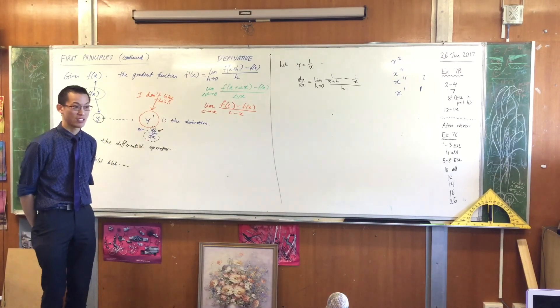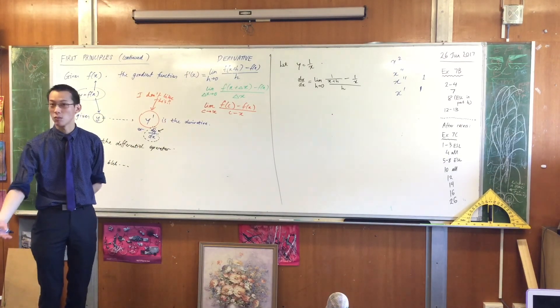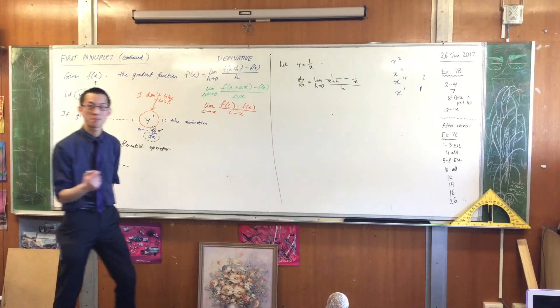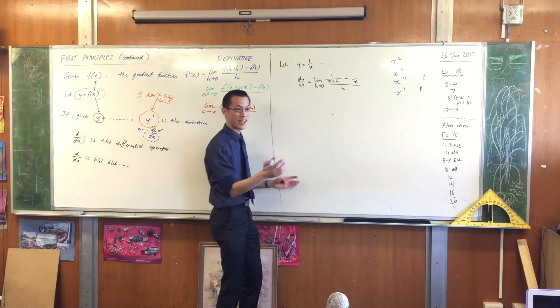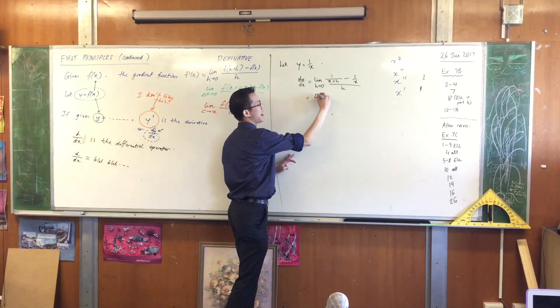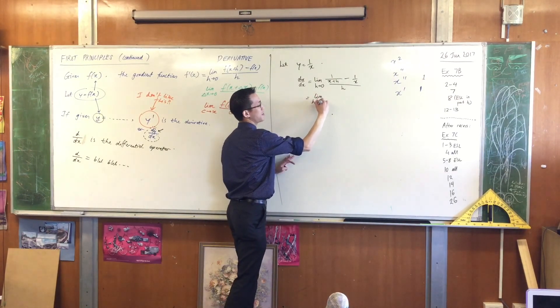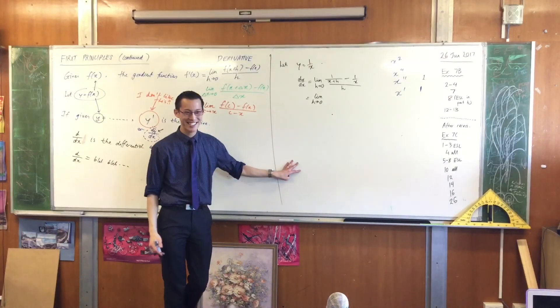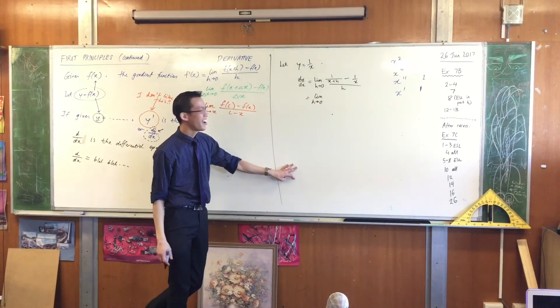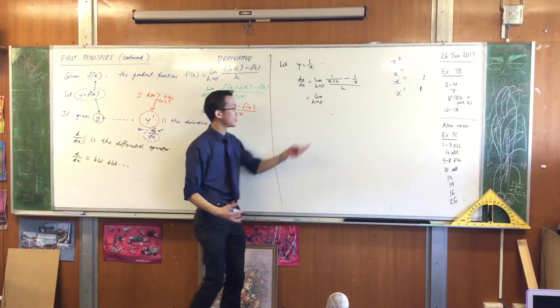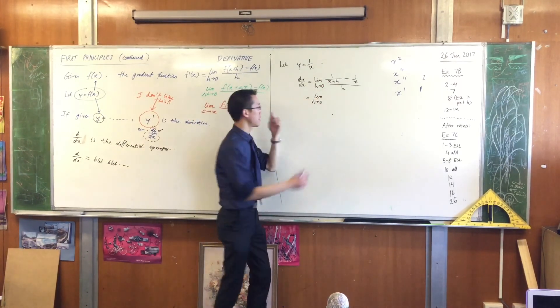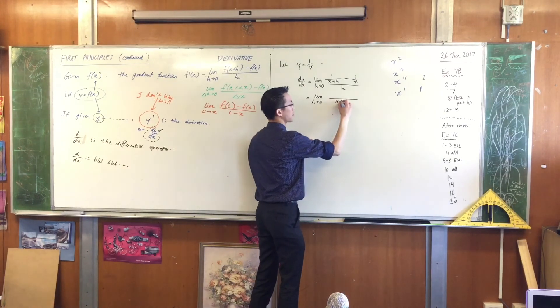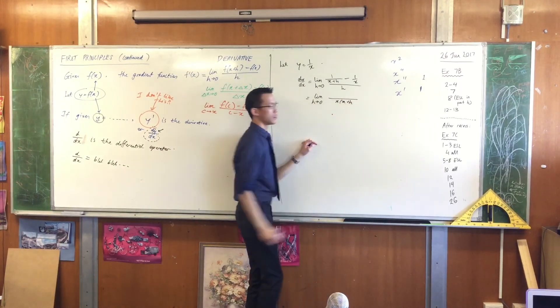So what would you like me to do instead? I have two fractions. Maybe I should just subtract them. What will I need to do in order to subtract them? What do I need between these two fractions? I need a common denominator. I'm going to write the limit. Why am I writing the limit again? Because I want the tangent, not the secant. The common denominator that's going to be useful to me is x times x plus h.